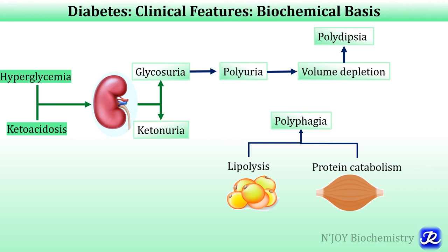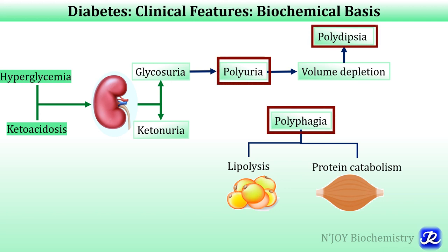Deficiency of insulin also leads to catabolism of both proteins in the muscle and lipolysis, increasing fatty acid and amino acid levels. These glucogenic amino acids produced by proteolysis are taken up by the liver and used as building blocks for glucose. The catabolism of proteins and fats induces a negative energy balance, which in turn leads to increased appetite — that is polyphagia. Despite the increased appetite, the catabolic effect dominates and results in weight loss and muscle weakness. The combination of polyphagia and weight loss is paradoxical and should always point to the possibility of diabetes.